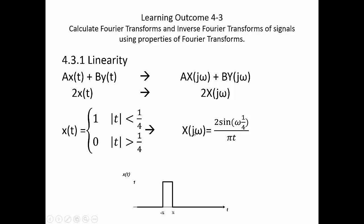This will have a Fourier transform of x of j omega. That's 2 sine of omega times one-quarter, that's our t value, divided by pi t. If we scale that function by 2, that's going to scale our x value by 2, and then likewise scale our x of j omega by 2.